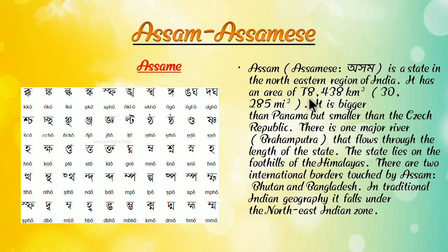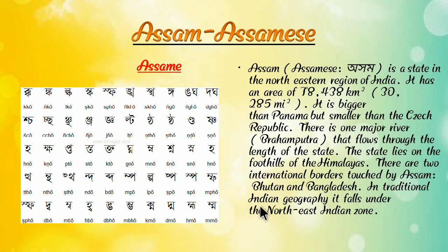Assam has an area of 78,438 square kilometers. It is bigger than Panama but smaller than the Czech Republic. There is one major river, the Brahmaputra, that flows through the state. The state lies on the foothills of the Himalayas and has two international borders — Bhutan and Bangladesh — and falls under the north-east Indian zone. Assamese language is spoken in the state of Assam.